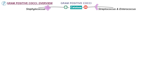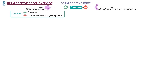Let's elaborate on Staphylococcus. Species of Staphylococcus can be categorized based on the presence of coagulase, which is a bacterial enzyme that induces blood or plasma coagulation. The coagulase positive group comprises Staphylococcus aureus.